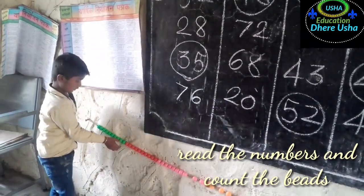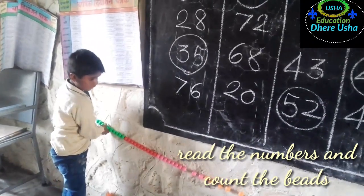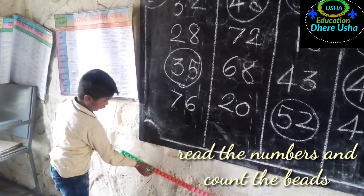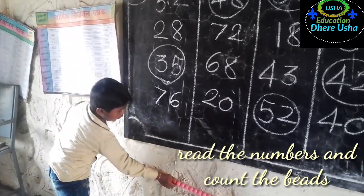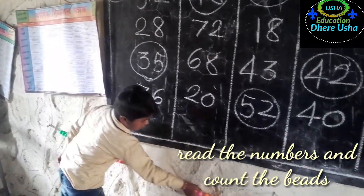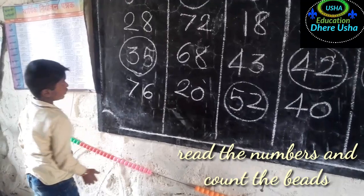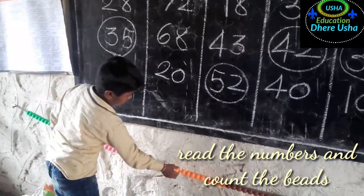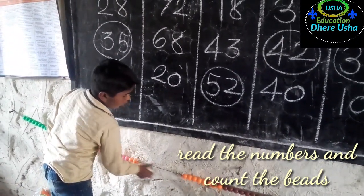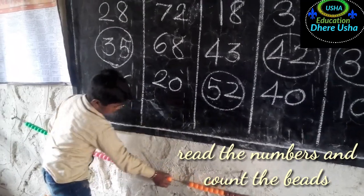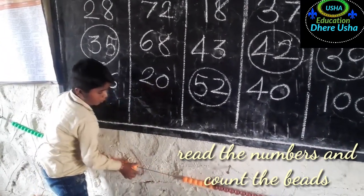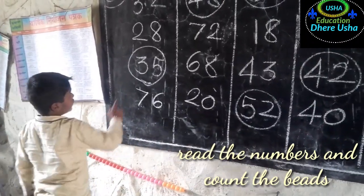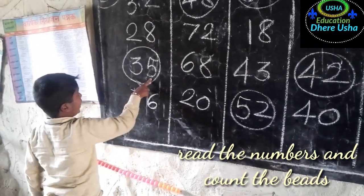Count the beads. One ten, two tens, three tens. How many units? Five. One, two, three, four, five. These beads are thirty-five. Very good.